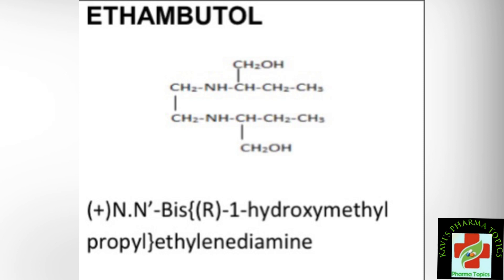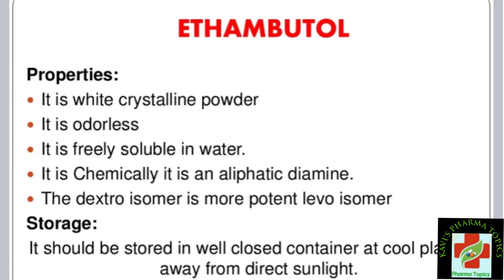Ethambutol properties: it is a white crystalline powder; it is odorless; it is freely soluble in water; and it is a chemical aliphatic diamine. An important point is that the dextro isomer is more potent than the levo isomer.